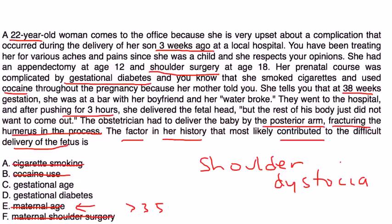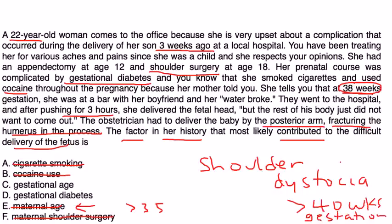She delivered at 38 weeks, so that's term. Gestational age is related to shoulder dystocia when it's post-dates — for example, greater than 40 weeks gestation — so 38 weeks doesn't really fall into that category. By process of elimination, the answer is gestational diabetes. We already know that gestational diabetes can cause a baby that's large and overweight, leading to a very difficult delivery and this complication.